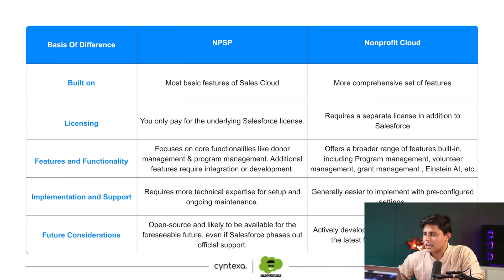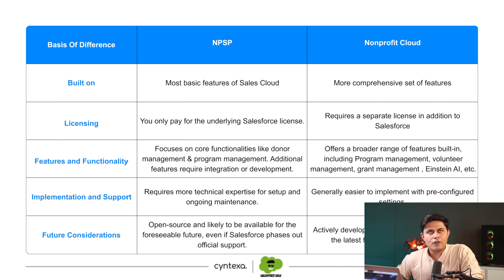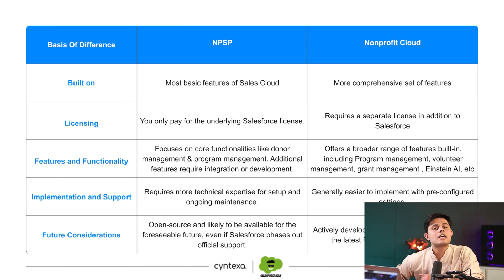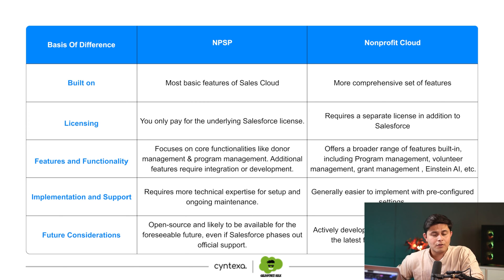NPSP is built on Sales Cloud itself, whereas Nonprofit Cloud is built on a comprehensive set of features using Salesforce Industries and Omni Studio. For NPSP you do not pay additionally, but for Nonprofit Cloud, in addition to your standard Salesforce licenses, you also have to pay for separate Nonprofit Cloud licenses. Always verify licensing details with your account executive before making any purchasing decisions.